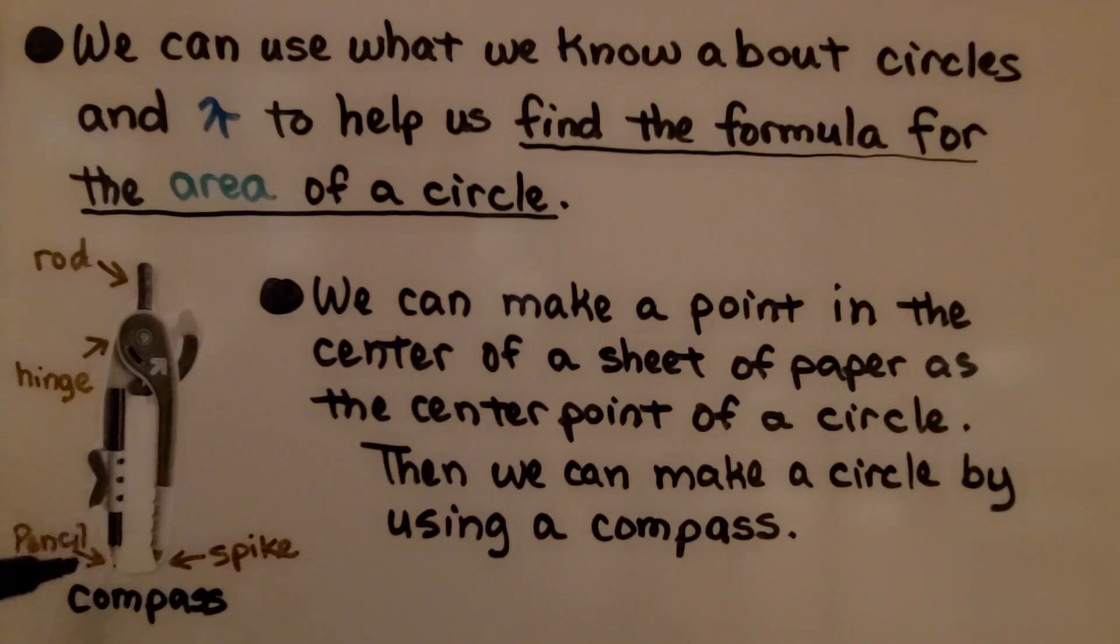A compass has two legs connected by a hinge. Usually one leg has a spike at its end to anchor the leg. The other leg holds a pencil.